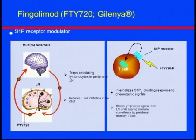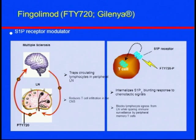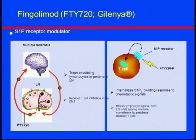Fingolimod (FTY720) was approved as the first oral therapy for relapsing MS in 2010. It represented a new class of molecule acting on the S1P receptor — sphingosine-1-phosphate receptor — which is a lipid receptor molecule widely located in many body tissues and cell types. This diagram shows S1P on the T cell surface, where the drug binds to the receptor and internalizes it.